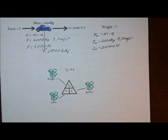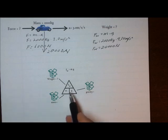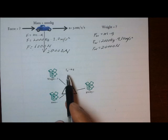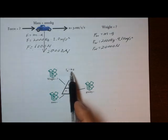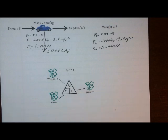On Earth, gravity is 9.8 meters per second squared, and that varies slightly depending on where you are. At the equator it's a little less; at the pole it's a little more, because you're closer to the center of mass of the Earth at the pole. Here's the magic triangle we talked about before, which we can use to rearrange this equation to solve for any variable — force of weight, mass, or gravity.